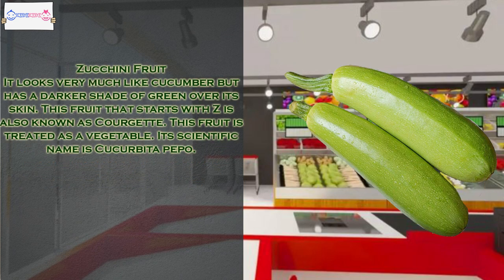Zucchini looks very much like cucumber but has a darker shade of green over its skin. This fruit that starts with Z is also known as courgette. This fruit is treated as a vegetable. Its scientific name is Cucurbita pepo.